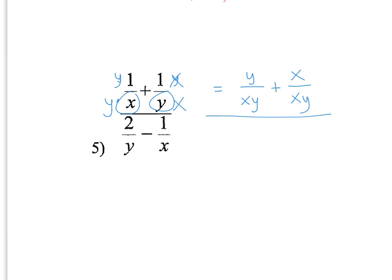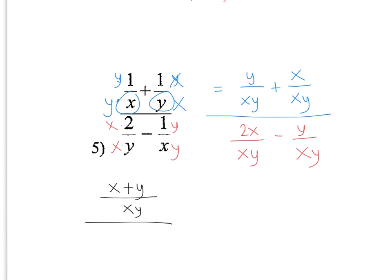And then here I multiply this one by y over y. So I'm going to have 2x over xy minus y over xy. So the numerator part turns into x plus y over xy, divided by 2x minus y over xy.